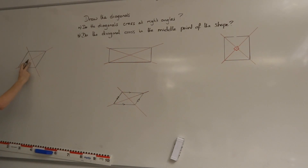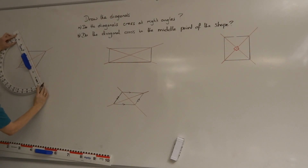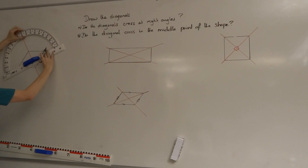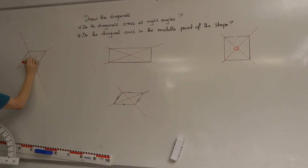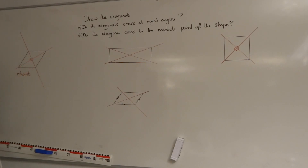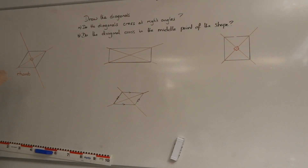We can also see that the rhombus looks very similar to a right angle as well. Let's extend one of these diagonals so we can measure it with our protractor. If we measure the angle in the centre of our rhombus, we get an angle of 90 degrees. So for the rhombus, the diagonals also cross at 90 degrees — because the lengths are all the same, the angles are all going to be the same, giving us this 90-degree cross.